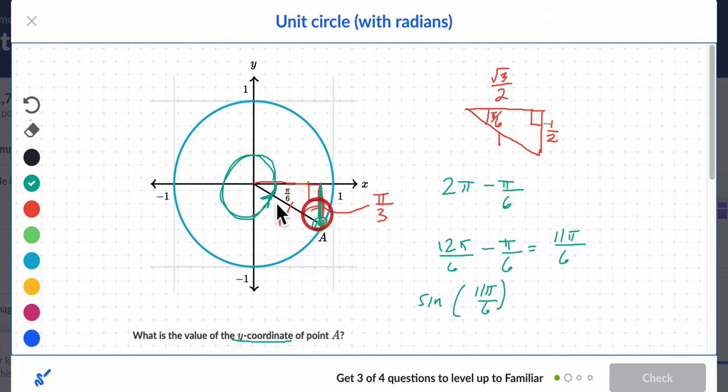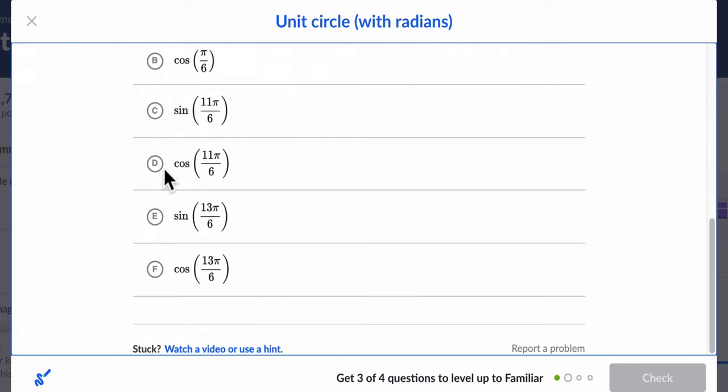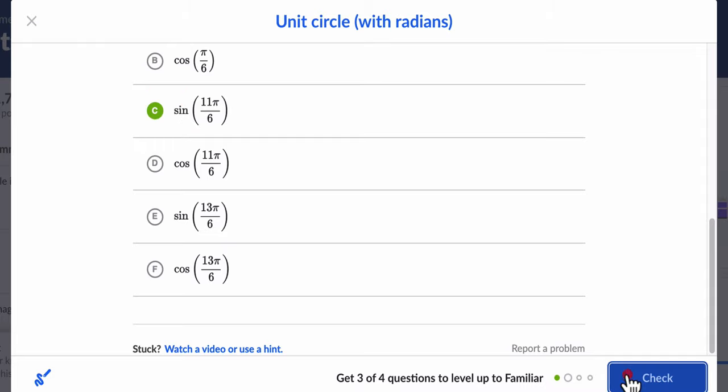And the sine is just opposite over hypotenuse, but the hypotenuse is just 1. So, it ends up just being whatever that opposite value is. So, it's the sine of 11 pi over 6. There it is. Yay!